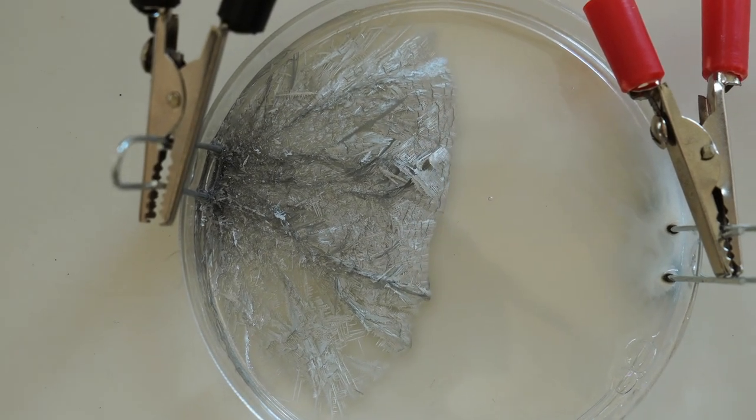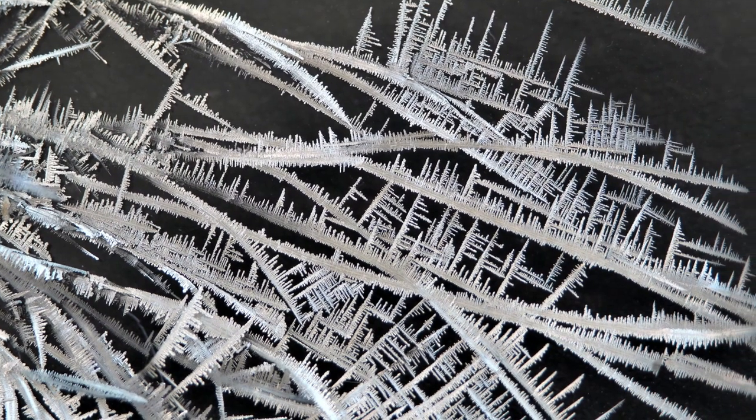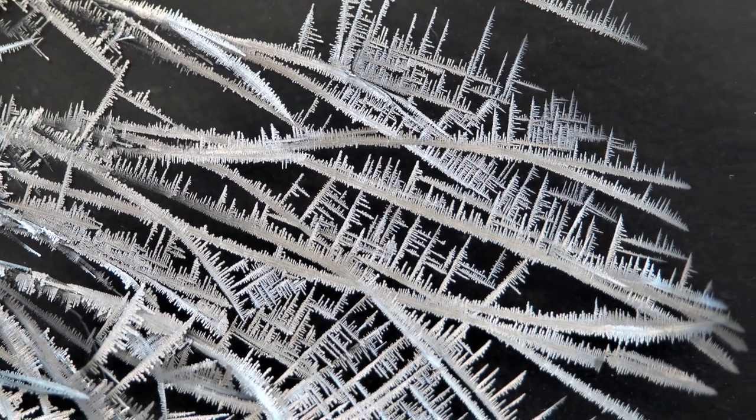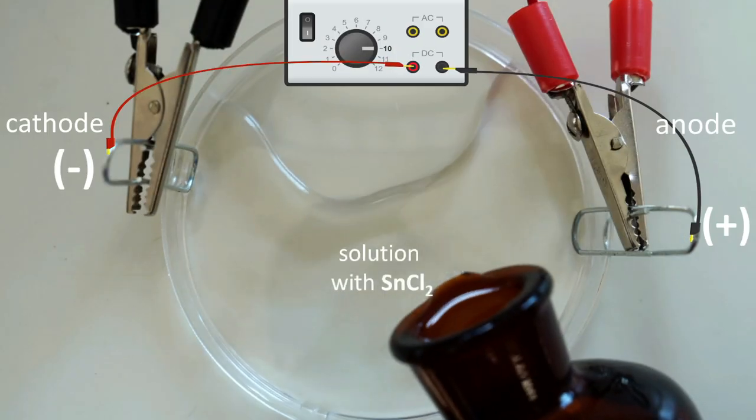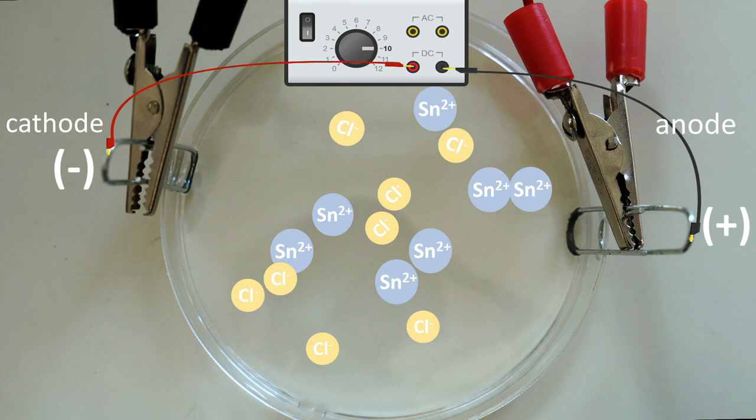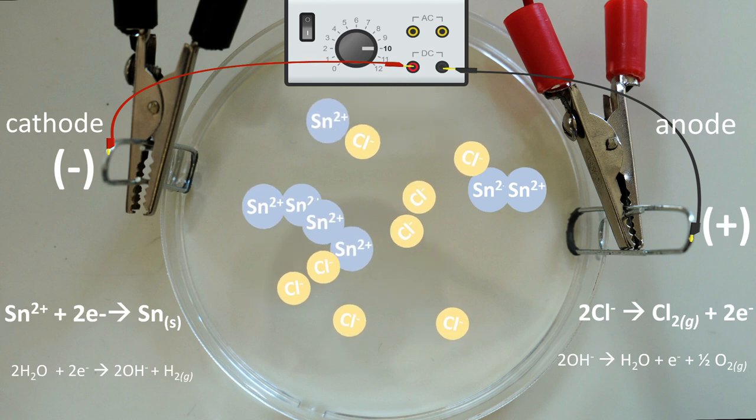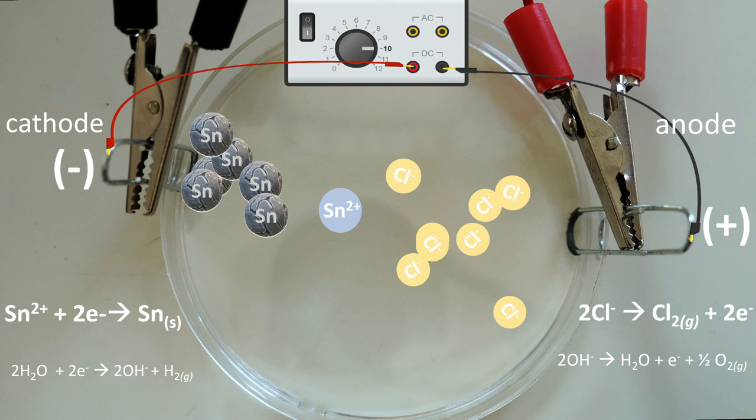Today we will focus on tin chloride electrolysis, and I literally mean focus. When we apply voltage to a tin chloride solution, positive tin ions migrate to the cathode, accept electrons and become tin atoms forming metal crystals.